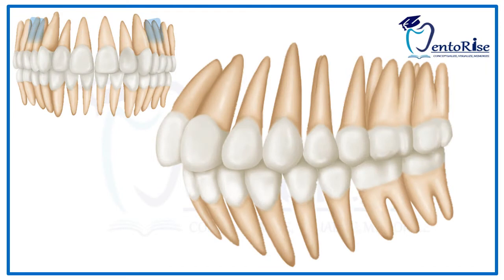The premolars are so named because they are anterior to the molars in the permanent dentition. They are the ones which succeed the deciduous molars. The premolars are also called bicuspids because they have two cusps. However, this term is misleading — we will discuss this while dealing with the anatomy of mandibular premolars.